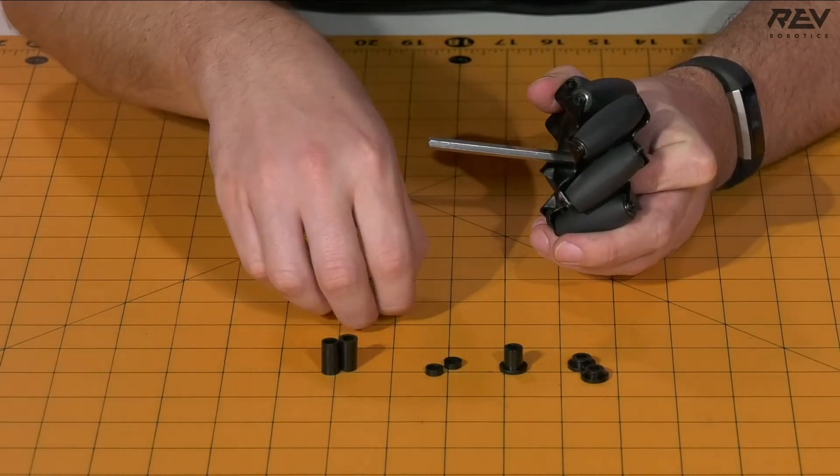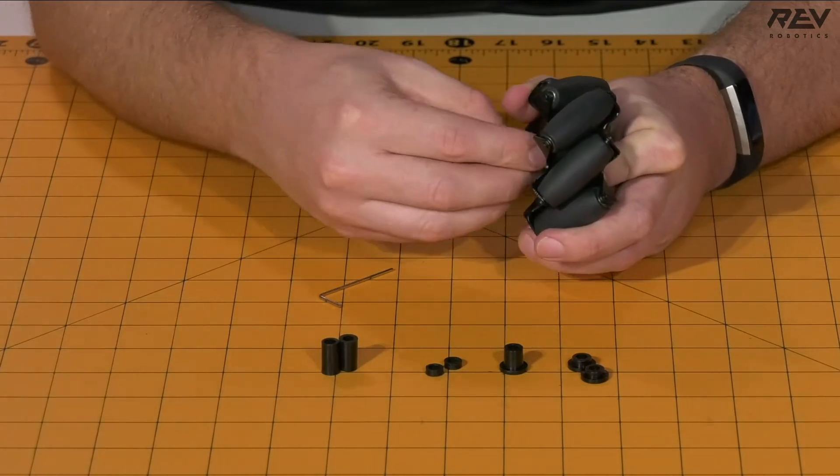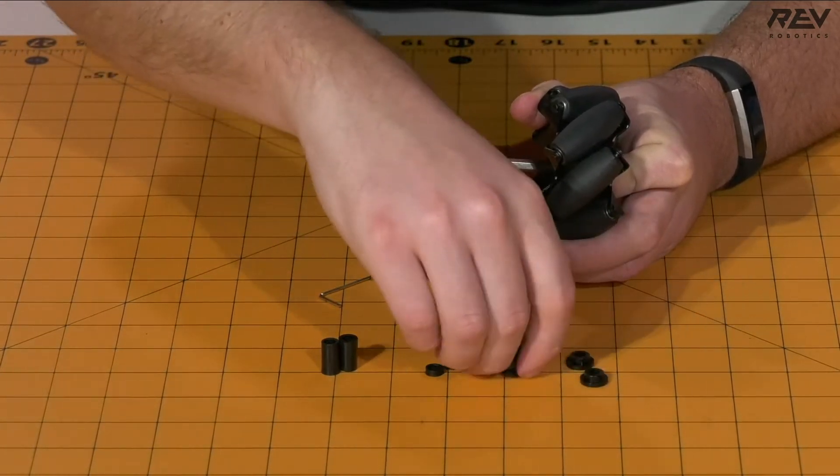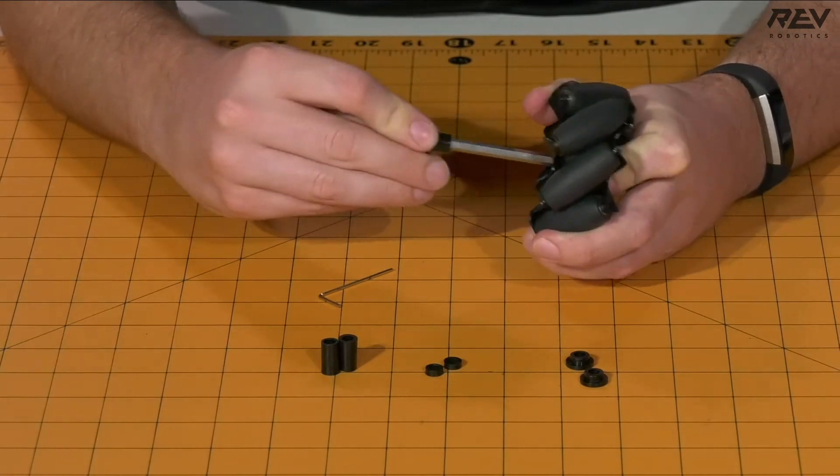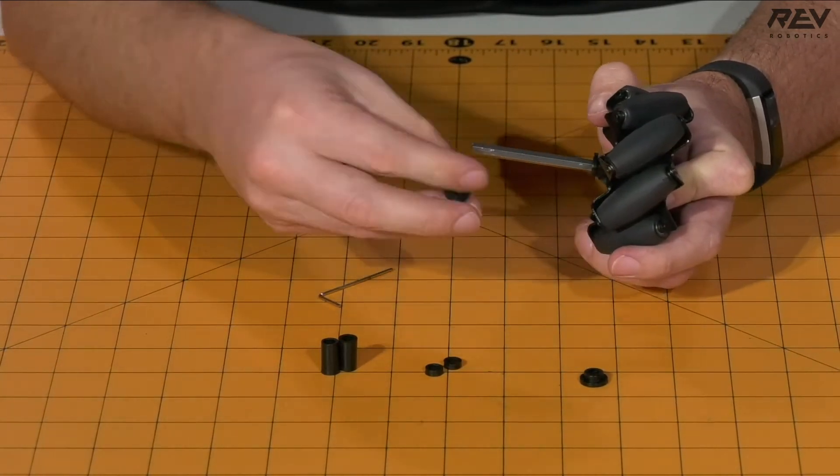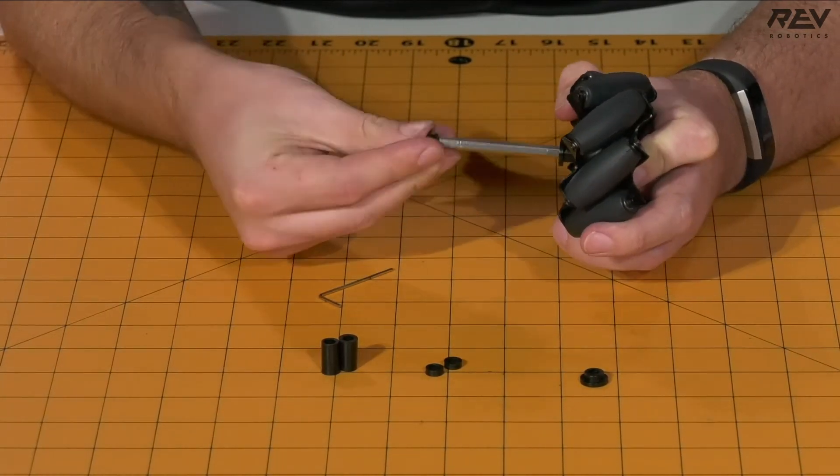Next add a 3mm spacer, followed by the long through-bore bearing. After the long through-bore bearing, add the short through-bore bearing.